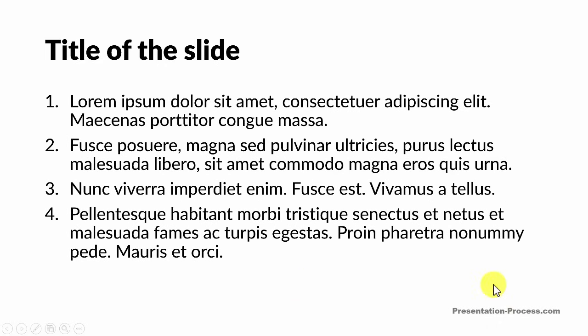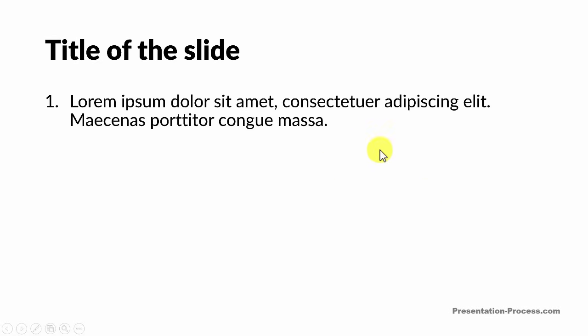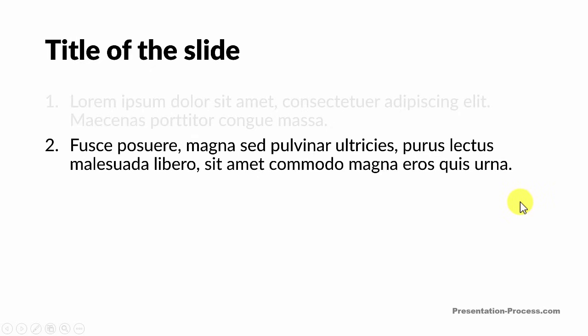After learning this basic text animation, you will learn a few tricks that will take this PowerPoint text animation to a whole new level. Here is the trick you will learn. As usual, you will have the title appear, then the first point appear. Now watch this: as you present your second point, the first point dims out.